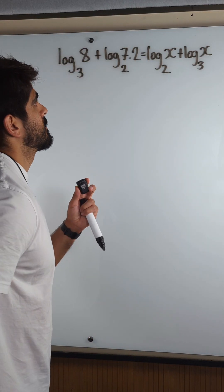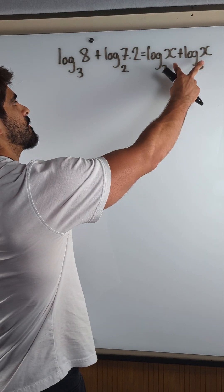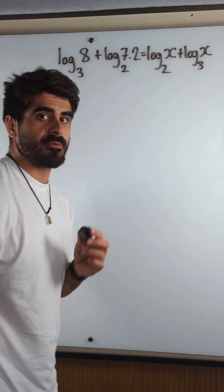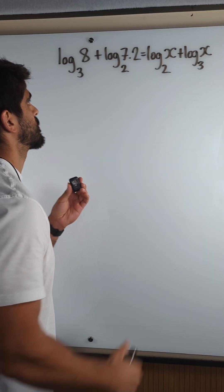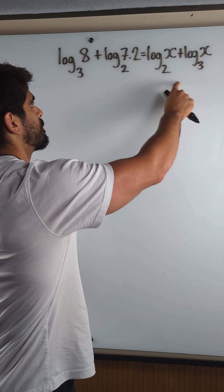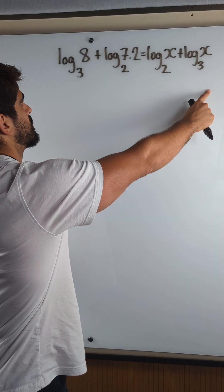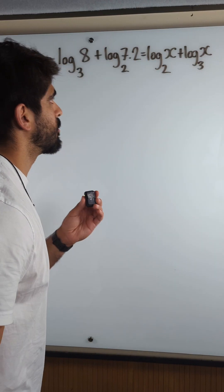Okay, so where the x is here, now the bases are different. We need to use the change of basis formula so that we can bring everything together. So all of these should either be log base 2 or log base 3. Well, what's the easier one to change to?